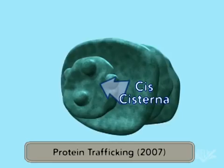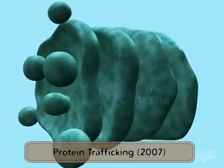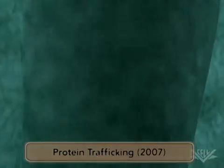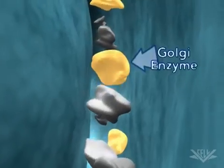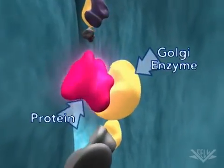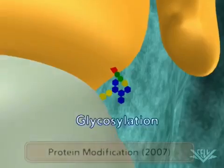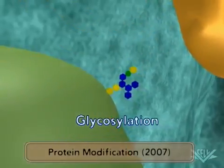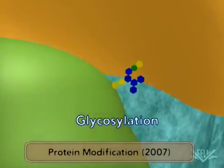Here, the vesicles merge to form a Golgi cisterna, with the proteins located inside the cisterna's membrane. As the cisterna matures, enzymes inside can modify the protein. This modification creates a molecular tag that is used to target the protein to a specific cellular location.